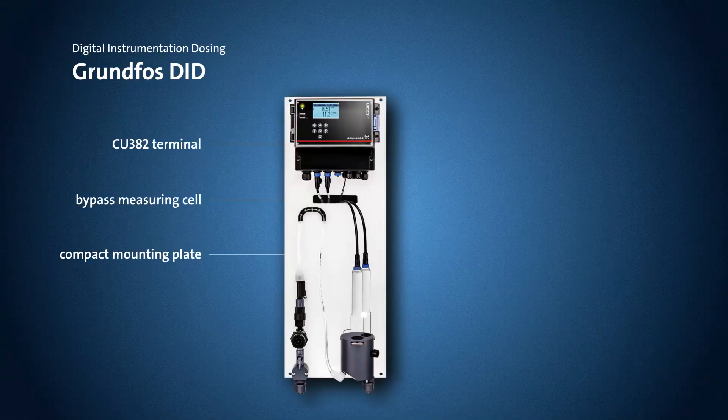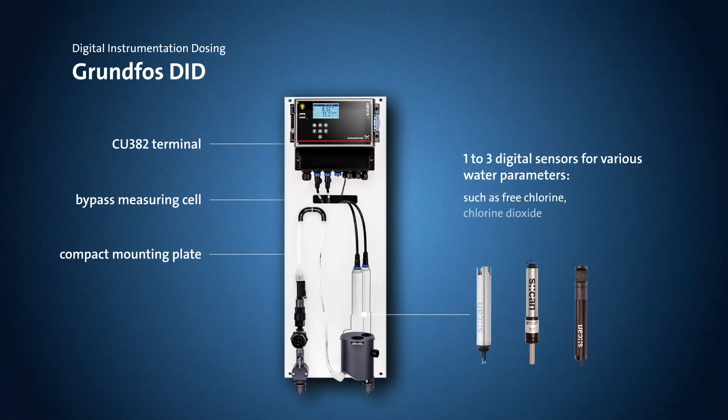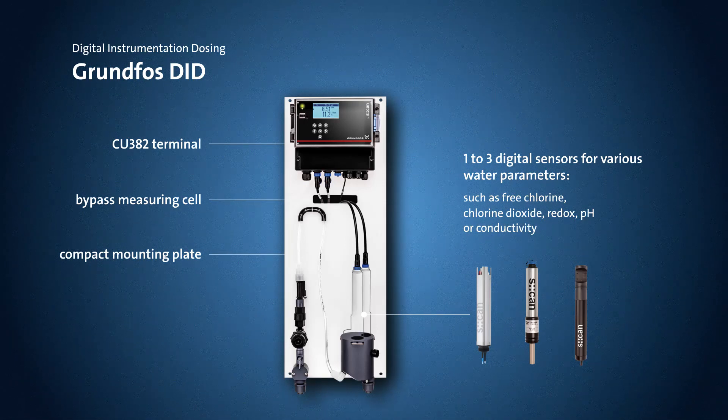The DID system is rounded off by the connection of 1-3 digital sensors for various water parameters such as free chlorine, chlorine dioxide, redox, pH or conductivity. When combined with a liquid dosing system, these water parameters can also be controlled in other applications such as swimming pools.